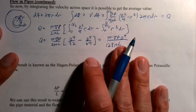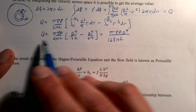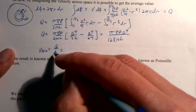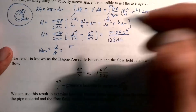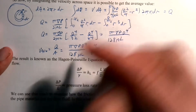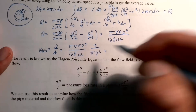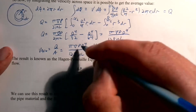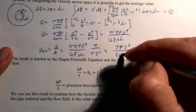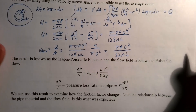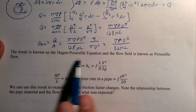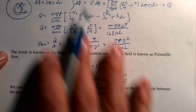The details are tedious, but the key result is the flow rate. The average velocity is V_avg = Q/A = Q/(πD²/4), so dividing through gives V_avg = ΔP·D²/(32μL). This is known as the Hagen-Poiseuille equation, and this whole flow distribution is called Poiseuille flow.